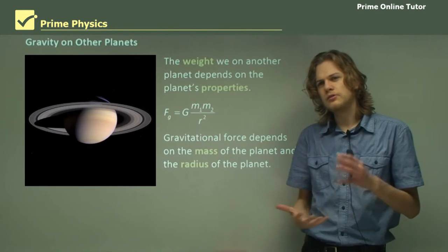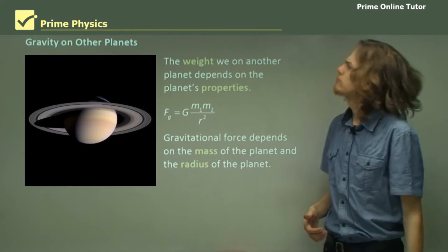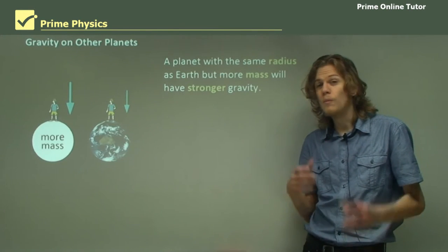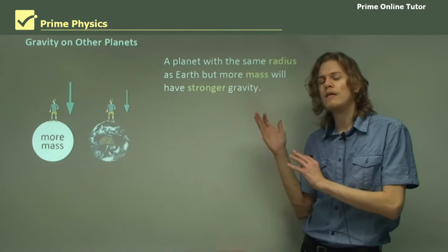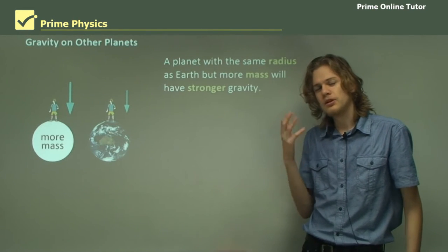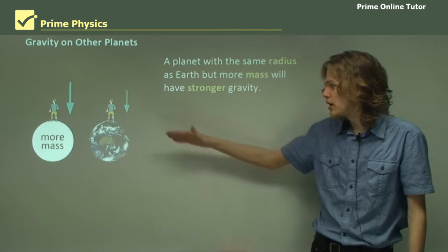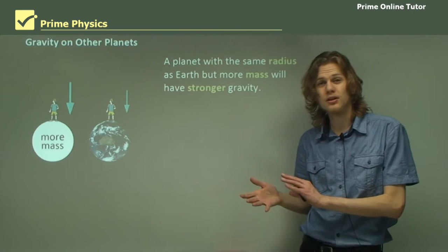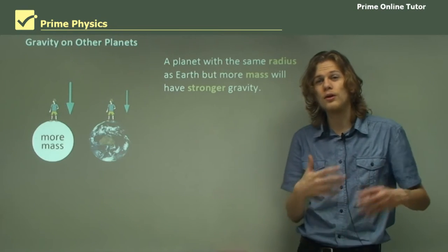So what's the gravitational force like on different planets? A planet with the same radius as the Earth but more mass will have stronger gravity at the surface. A gravitational field is proportional to mass so if radius is the same something with more mass will have a greater gravitational field and so greater acceleration.